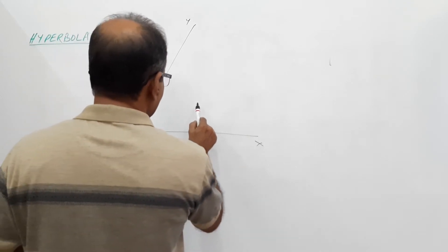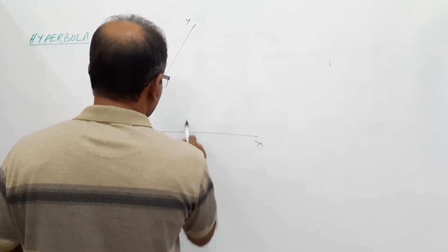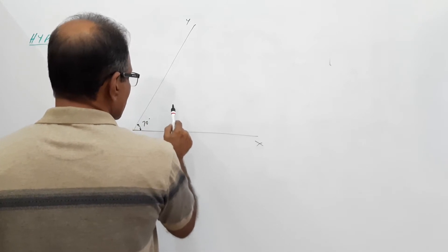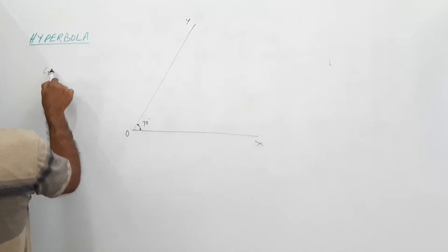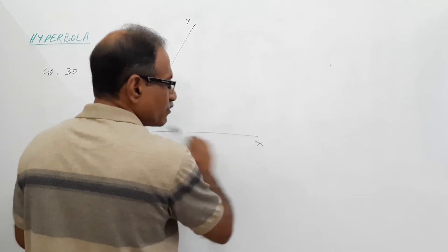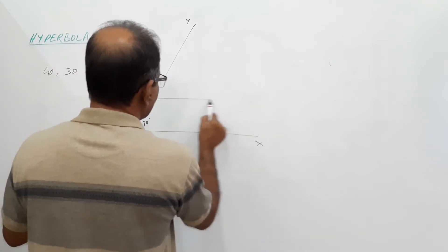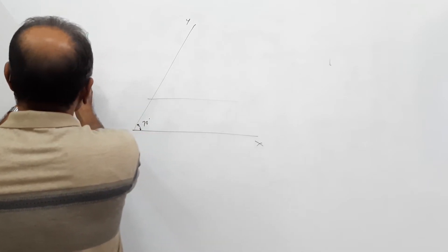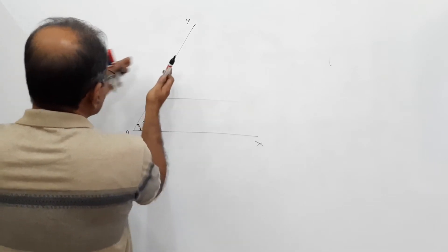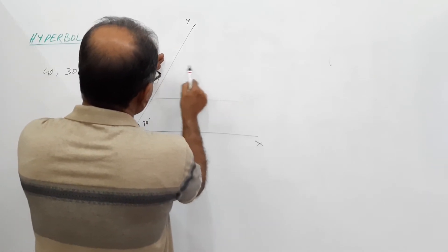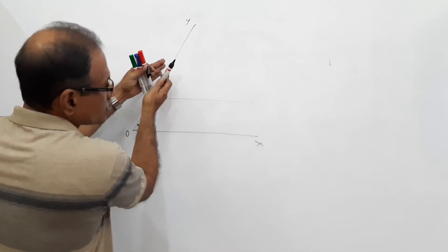40mm from one asymptote and 30mm from the other asymptote means you have to take the minimum distance. Draw a vertical line anywhere here, or draw a line parallel to this. 30mm from this parallel - the distance must be minimum, so it is a parallel distance.